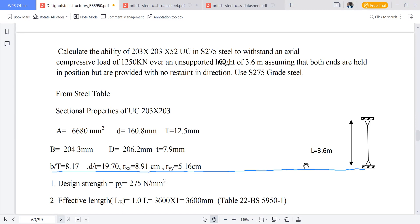Now we'll start by reading the section properties of universal column 203 by 203 by 52 from the steel table. This is how we will proceed. This is our steel table for the universal column.